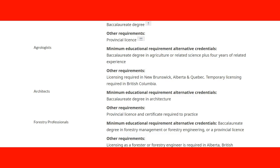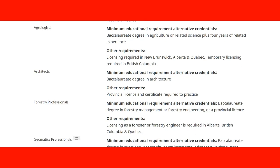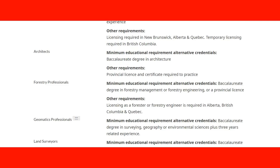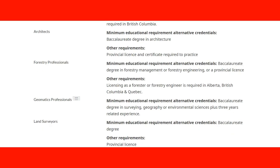That's why it's important to check the requirements in the province where you plan to work, especially if you're going through a free trade agreement. If you're entering under one of these free trade agreements, you need to verify the requirements of your profession in the province where you plan to settle. Architects, for example, also require a bachelor's degree as a minimum, plus a provincial license and certificate to practice.